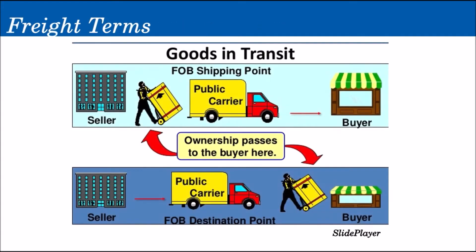The first two terms we need to understand are FOB Shipping Point and FOB Destination Point. Looking at the diagram, there is a seller on the left side and a buyer on the right side, and we can see that goods are being delivered. Always remember: FOB stands for Free on Board. When we say FOB Shipping Point, the ownership or the title in the merchandise will pass to the buyer at the point of transit — meaning the buyer owns the merchandise while it is still in transit.